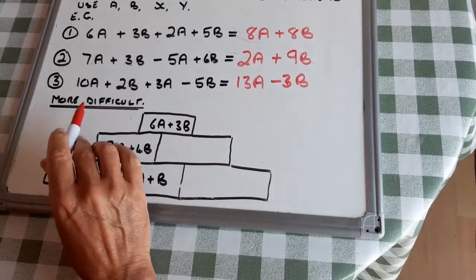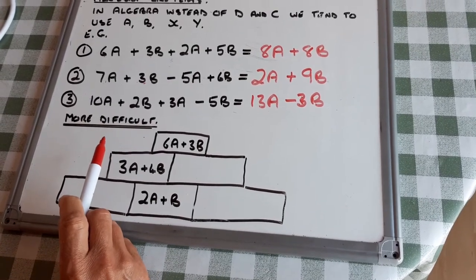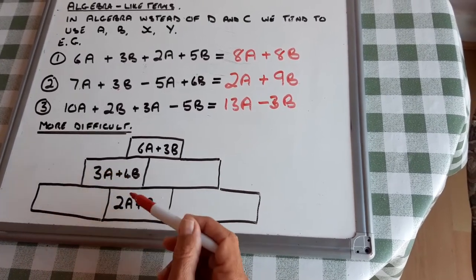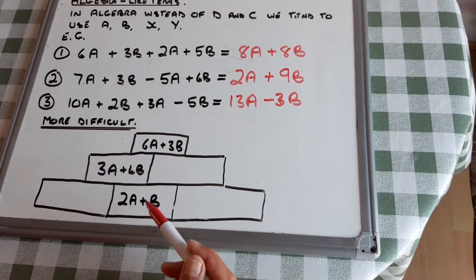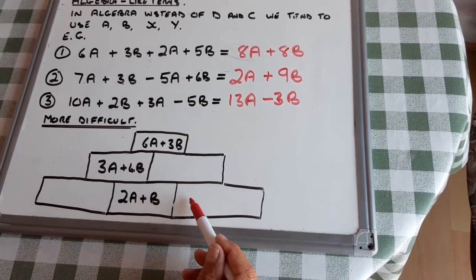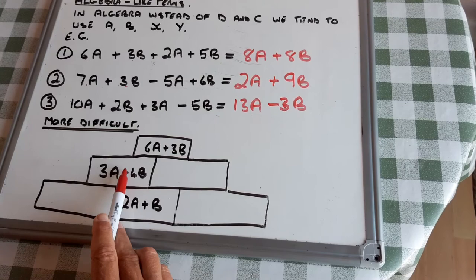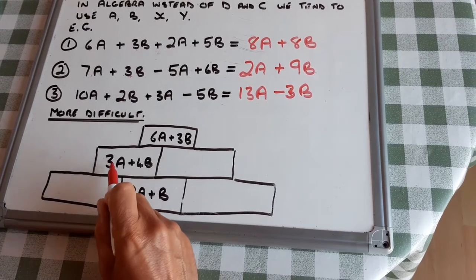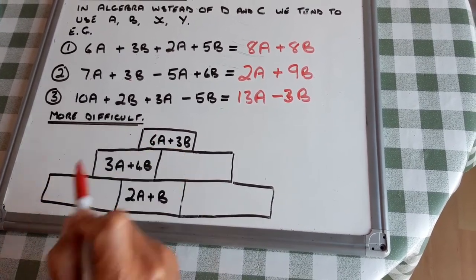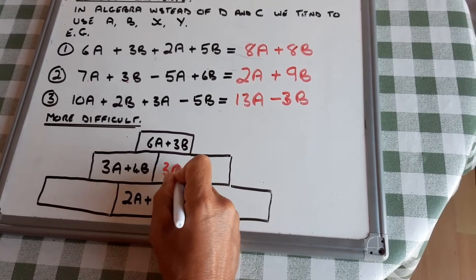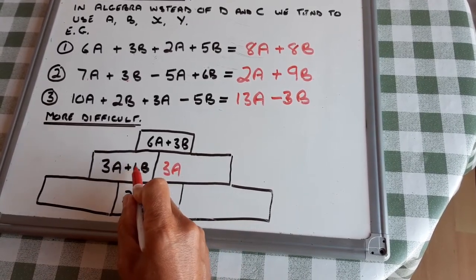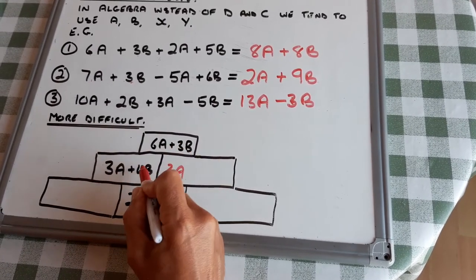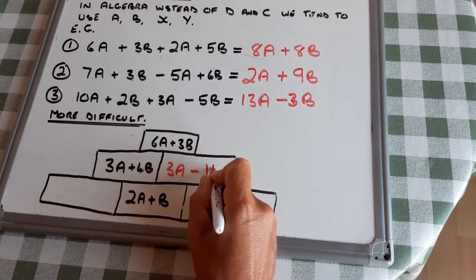Now one with a bit of problem solving. You add the bottom two squares together to give the rectangle above. But those two rectangles will give that one. This is a more difficult question. So what do I add to 3A to give me 6A? I add 3A. I've got 4B and what do I... oh, I must... so I have to take away minus 1B.